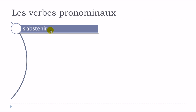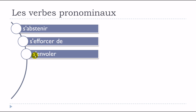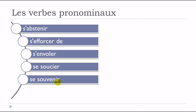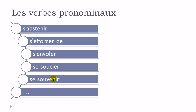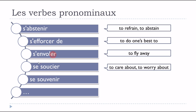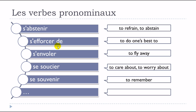Further examples of verbs that only exist as verbes pronominaux: s'abstenir, s'efforcer de, s'envoler, se soucier, se souvenir. These verbs are only used with 'se' before them and don't exist without it.